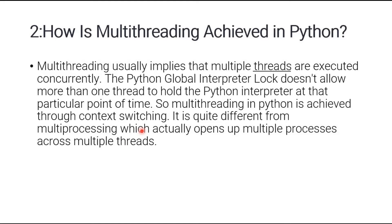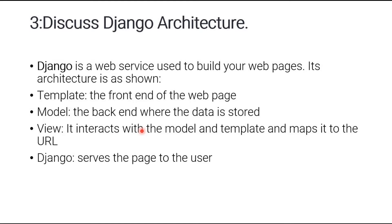Question number three: discuss the Django architecture. Django is a web framework used to build web pages. Its architecture has three components: a template (the front end), a model (the back end where data is stored), and a view which interacts with the model and template and maps to a URL. Django then serves the page to the user.